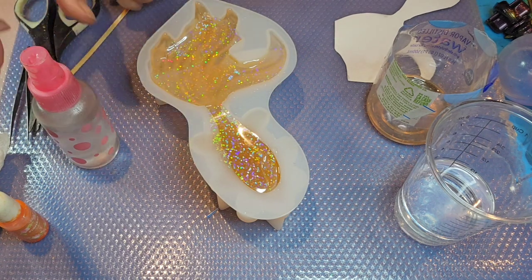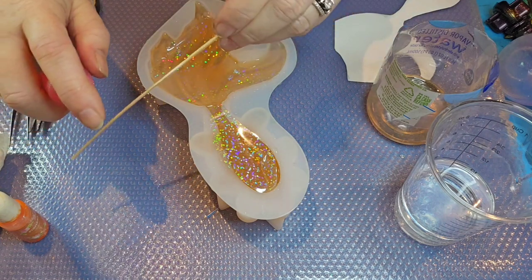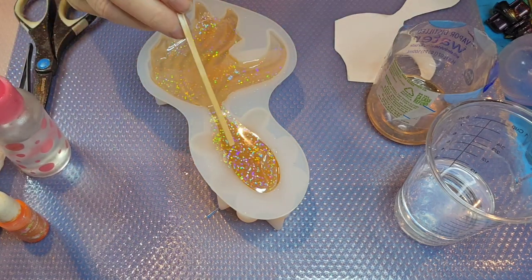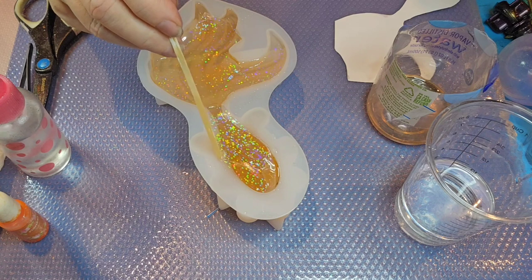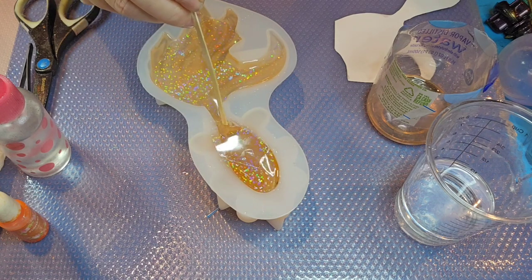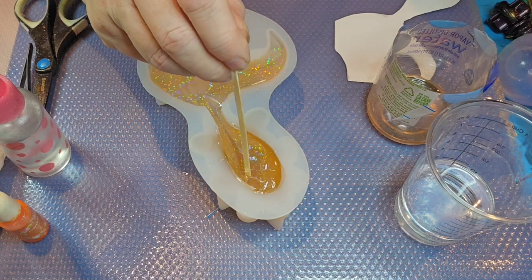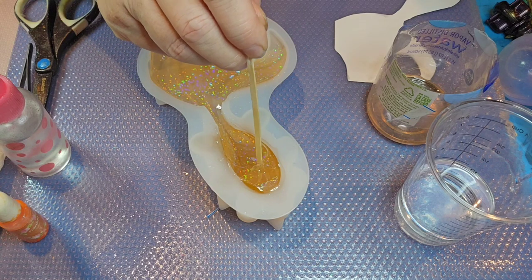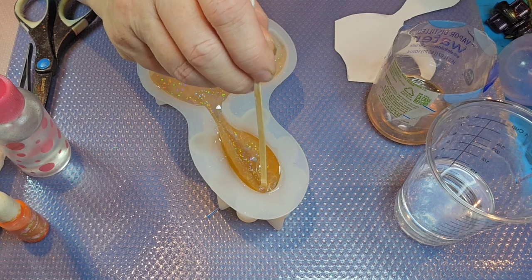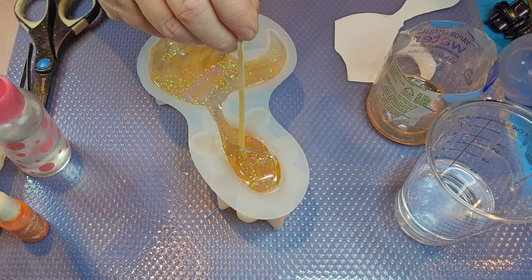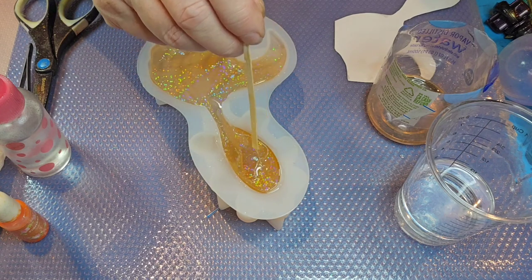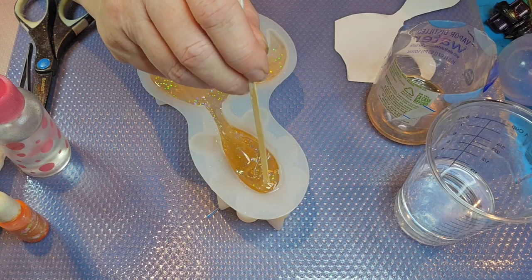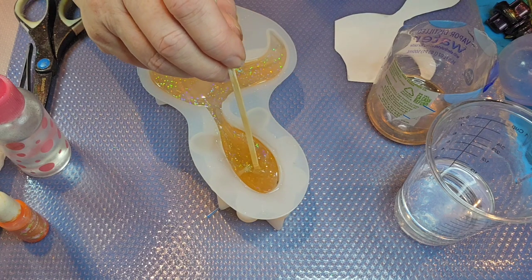Now I'm going to just spray my stick here with some alcohol and then kind of help it get down inside of here. It's going to be a little bit puckered. I don't really care about that. Just want it to be down inside of the mold. There we go. I don't see any bubbles under there.